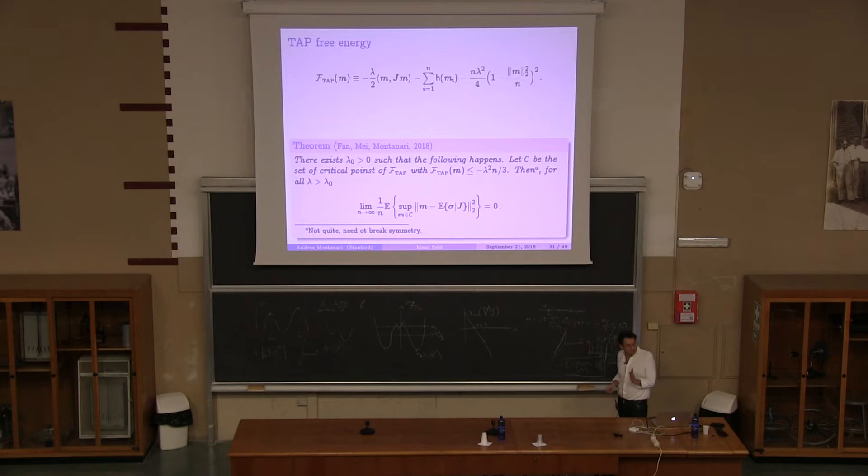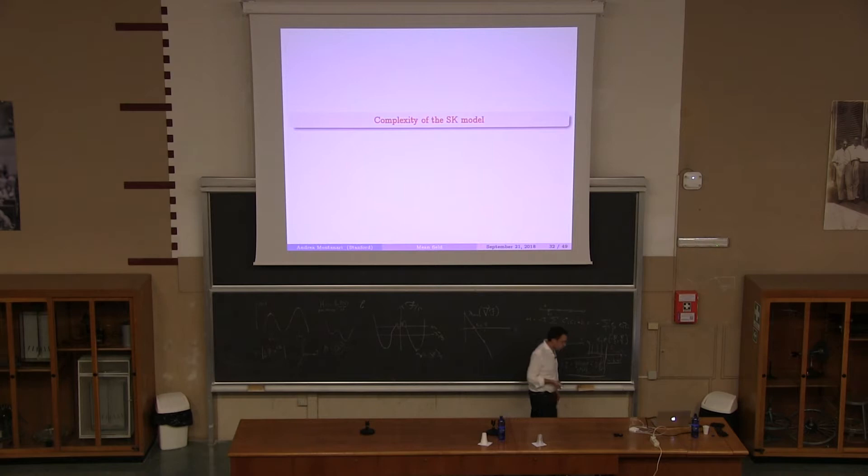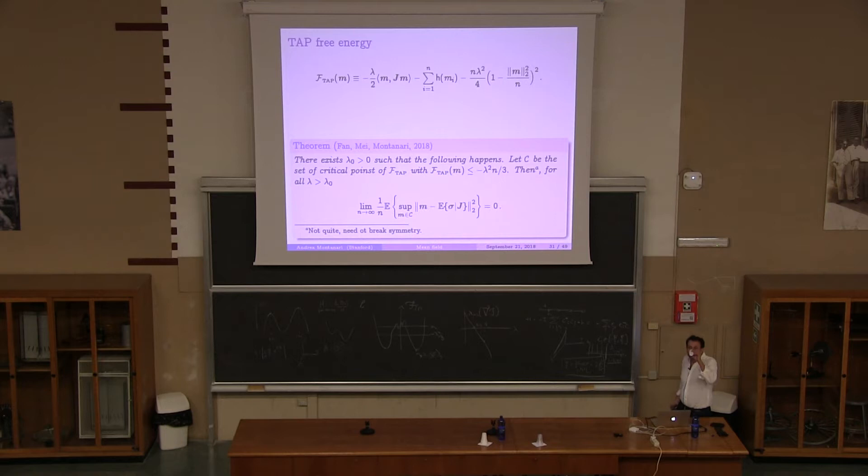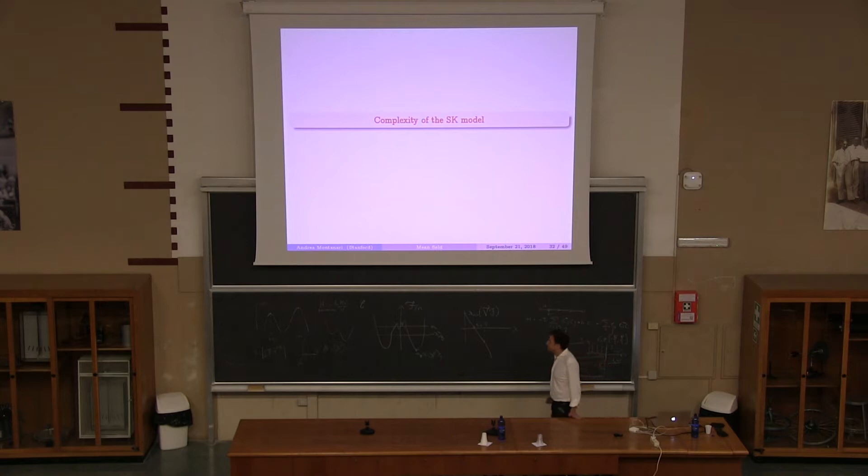Ideally, one would like to get something all the way to lambda 0 equals 1. That is, if you minimize the free energy, you get the correct marginals, but we cannot prove that. Okay? We expect something like this to be true all the way to lambda equal 1. But this is telling at least that in that regime, it's possible if you minimize the TAP free energy, you get the correct marginals. So, in another sense, it tells you that the TAP free energy is a good variational principle. By the way, one interesting question, open problem is whether there are other variational principles that are equally good. Other free energies, because TAP free energy has a lot of not nice properties. Okay. So, is the result clear?